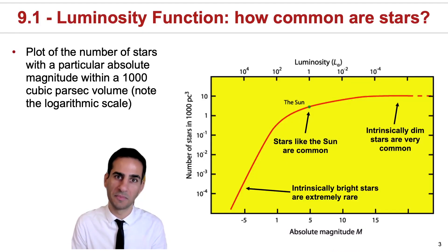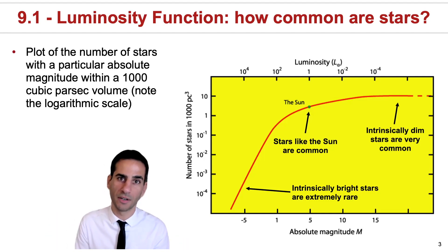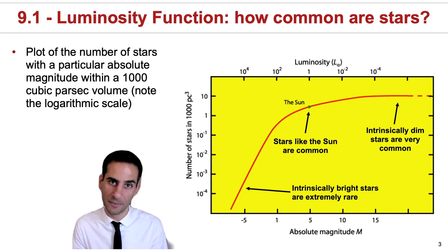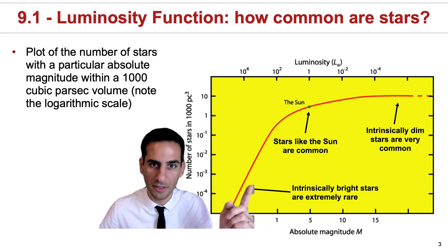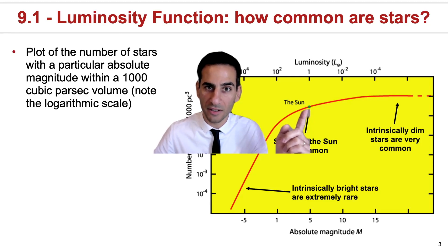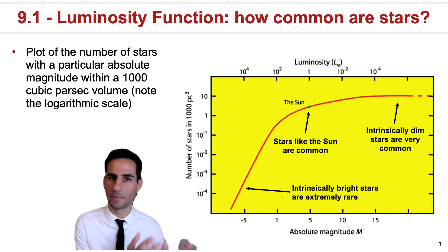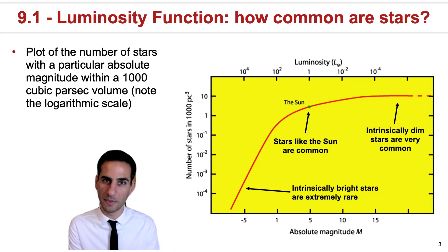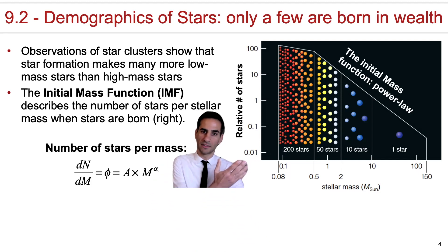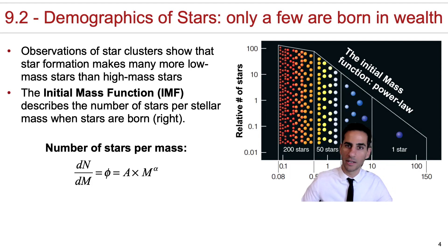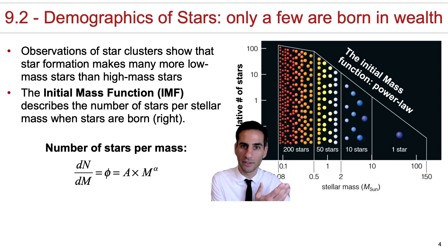Imagine we use telescopes to survey the solar neighborhood, trying to count how many stars there are in this local volume as a function of, for example, the absolute magnitude of a star. If we do that, we realize there aren't that many bright stars — stars like the sun are quite common, but stars which are even fainter are even more common. When we do this, we're looking at the end product of stars. Perhaps luminous stars are rare because they evolve off the main sequence and disappear. So what about their formation?